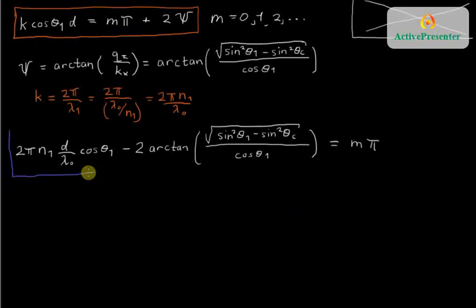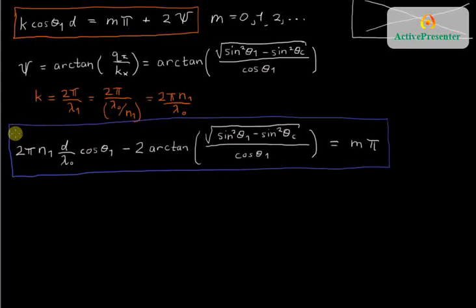So this is really the expression as a practical matter that you can plug into to figure out the relationship between parameters for a slab waveguide. You've got the thickness, the air wavelength, the refractive index, and the angle of the light. So all of the properties of that light. You've also got the refractive index dictating the critical angle, and you've got the angle of incidence, θ1.